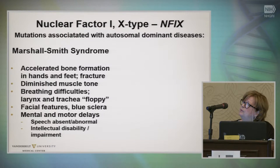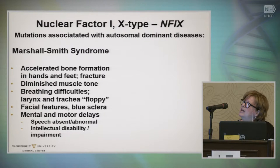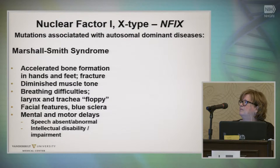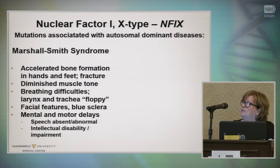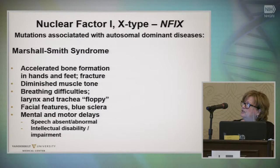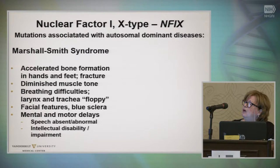Phenotypes associated with Marshall-Smith syndrome include accelerated bone formation in hands and feet and fracture, diminished muscle tone, breathing difficulties — the larynx and trachea can be floppy — classic facial features, blue sclera, and mental and motor delays. Sometimes speech is absent or abnormal, with intellectual disability and impairment.